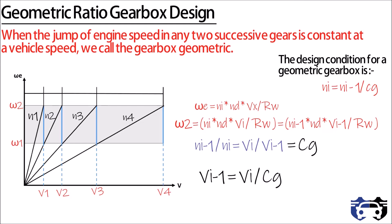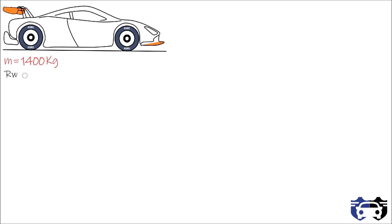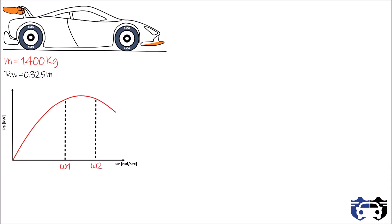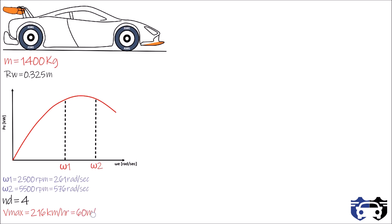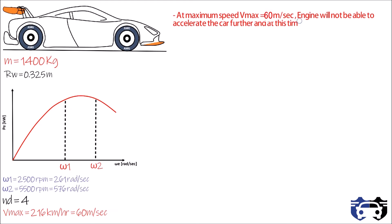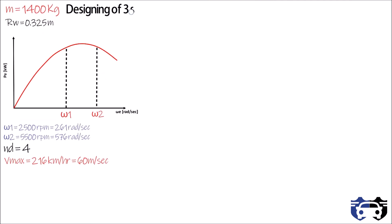Things can seem a bit confusing here, so let's take an example. We have a car of mass 1400 kg with a tire of effective radius rw equals 0.325 m. The engine runs between omega 1 equals 2500 rpm (approximately 261 rad/s) and omega 2 equals 5500 rpm (approximately 576 rad/s). The differential ratio is nd equals 4, and the maximum vehicle velocity is v_max equals 216 km/h, which equals 60 m/s. At maximum speed, the engine is running at the top of the working range, omega 2. Now let's design a 3-speed gearbox for this car.